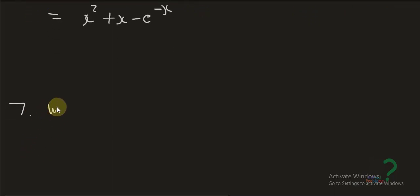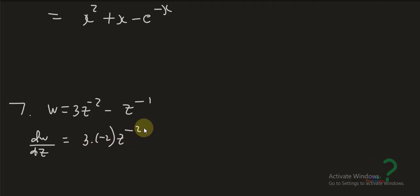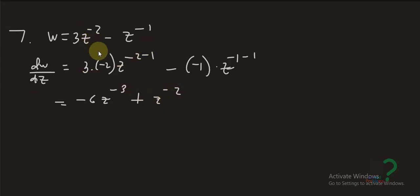Example seven: w equals 3z to the negative 2 minus z to the negative 1. So dw over dz equals 3 times negative 2 times z to the negative 3, minus negative 1 times z to the negative 2, which gives negative 6z to the negative 3 plus z to the negative 2. We always multiply the coefficient by the exponent and subtract 1 from the exponent.